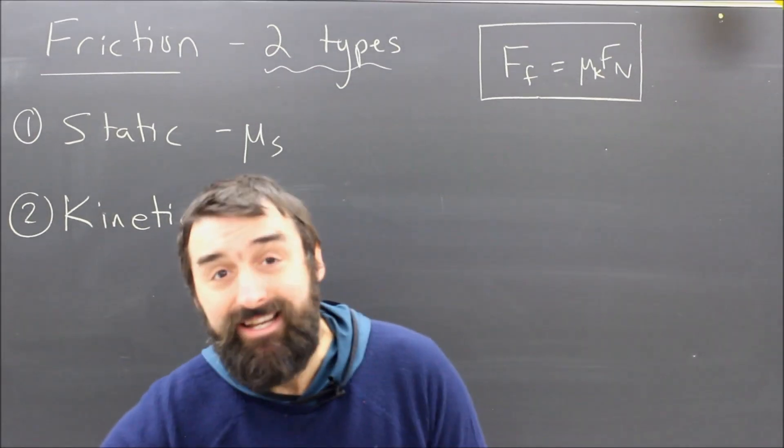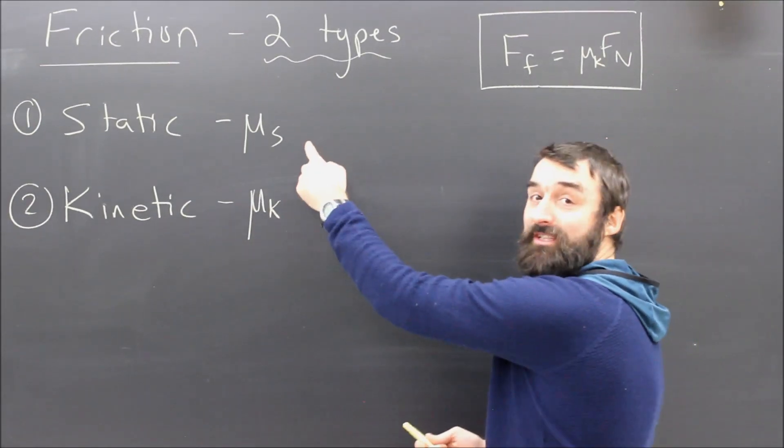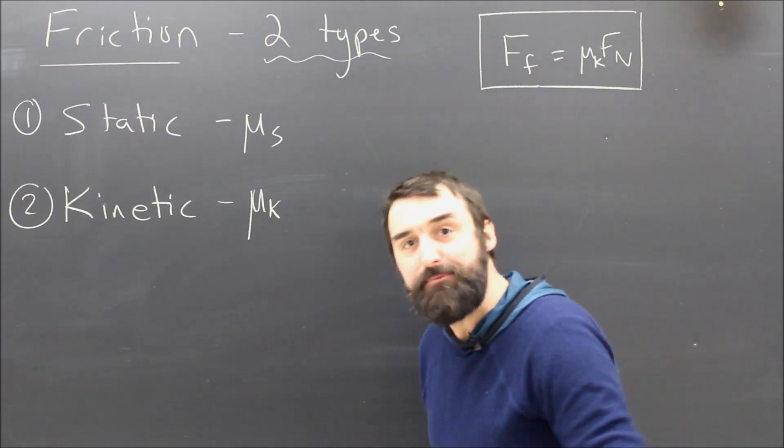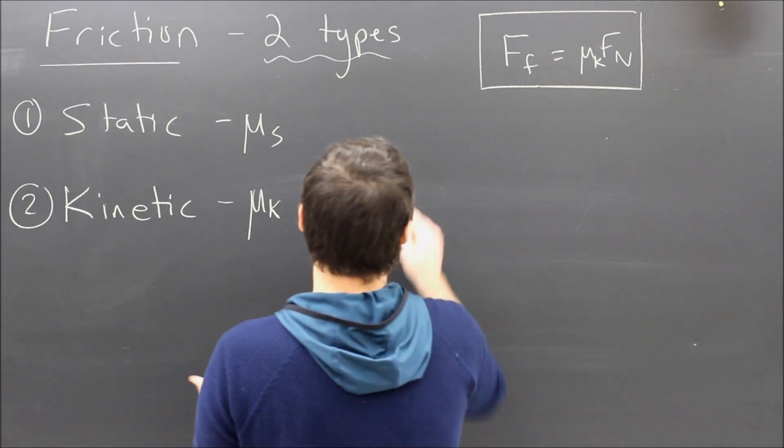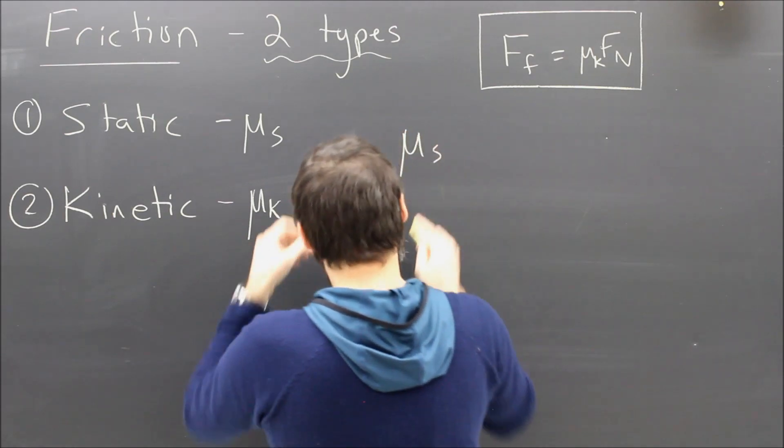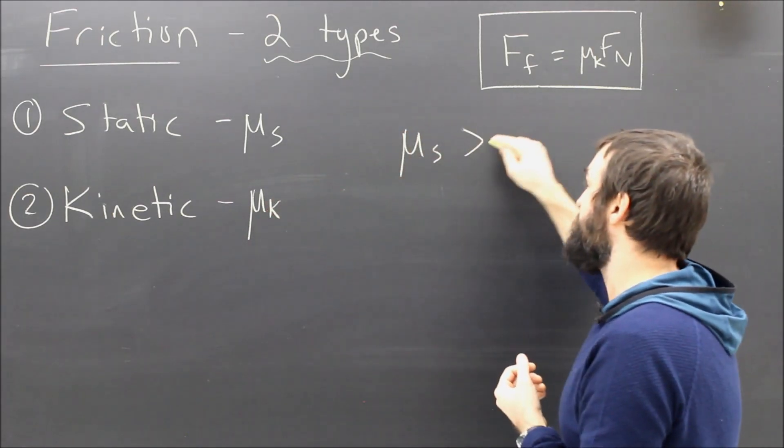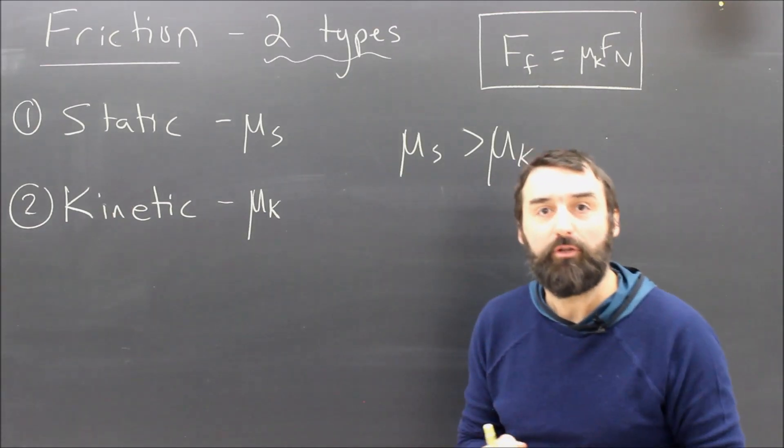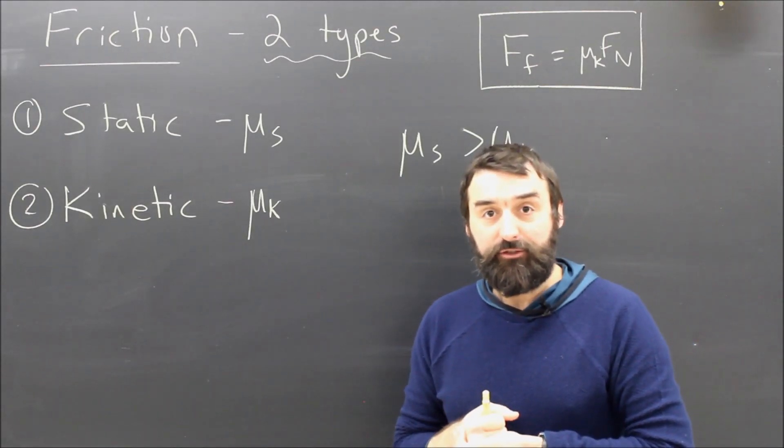What that tells me is that the static friction is actually bigger than the kinetic friction. It's easier to keep something moving than to start it moving, and that is because, in general, the coefficient of static friction is bigger than the coefficient of kinetic friction. So in general, static friction is stronger than kinetic friction.